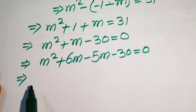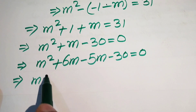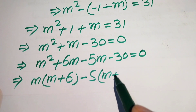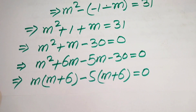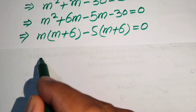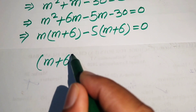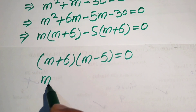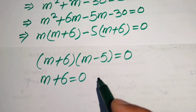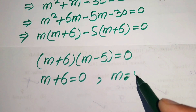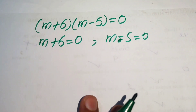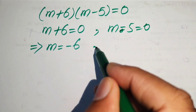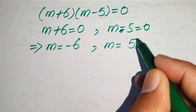This is a quadratic in m, so we factor it. We need two numbers whose product is minus 30 and whose sum is plus 1. Factoring gives m squared plus 6m minus 5m minus 30 equals zero, which becomes m times m plus 6, minus 5 times m plus 6 equals zero, and then m plus 6 times m minus 5 equals zero. So m equals minus 6 or m equals 5.